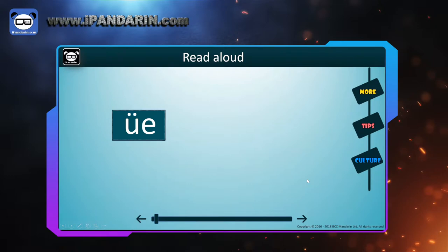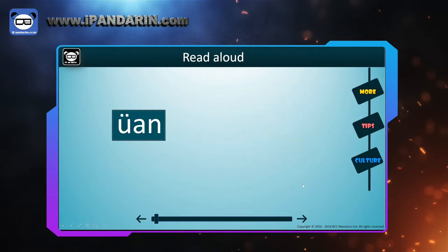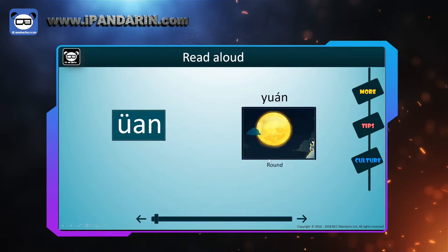Ü — a compound final led by 'yu'. Repeat after me: Ü. And in Chinese, 月 (yuè), which means moon. ÜAN — I can't find one English equivalent. Repeat after me: ÜAN. And in Chinese, 圆 (yuán), which means round.